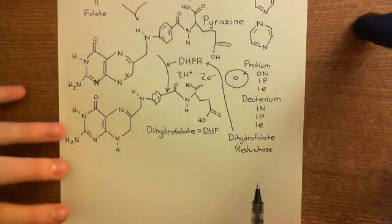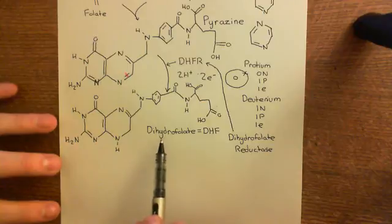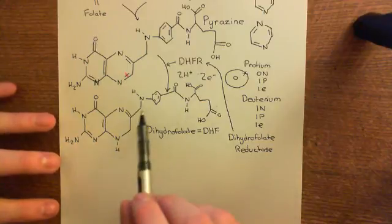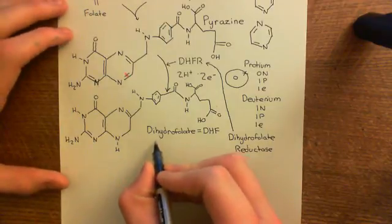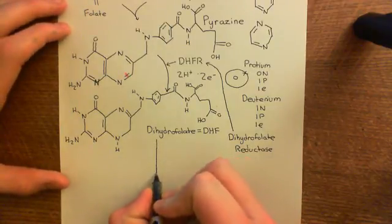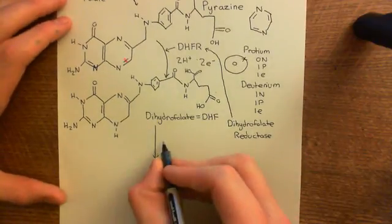So we've seen so far that it's going to be involved in converting folic acid into dihydrofolate. So it has reduced the folic acid by breaking this double bond here. Okay, now what it's going to do is convert dihydrofolate into tetrahydrofolate. So you're going to bring in another two hydrogen atoms.